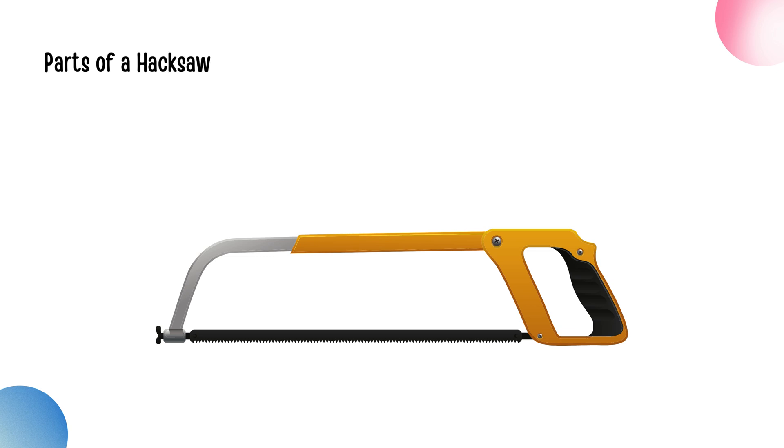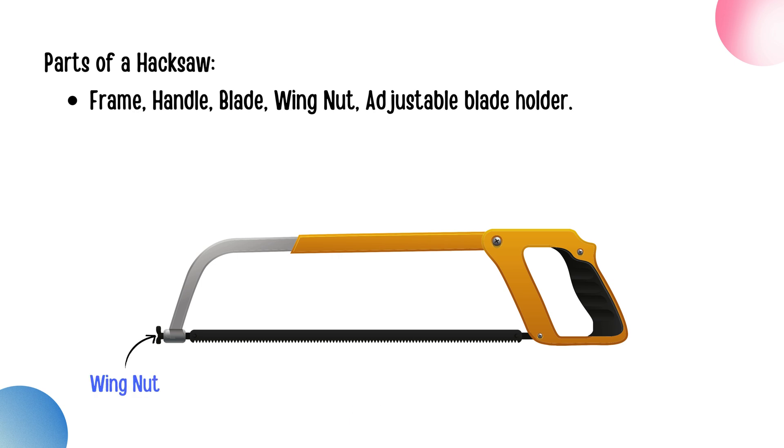Let's quickly break down the main parts of a hacksaw clearly. The frame, the robust structure holding the blade securely. The handle, for comfortable grip and controlled motion. The blade, the sharp, replaceable cutting element. The wing nut, allows easy adjustment and blade tightening. Adjustable blade holder, helps accommodate different blade lengths securely.